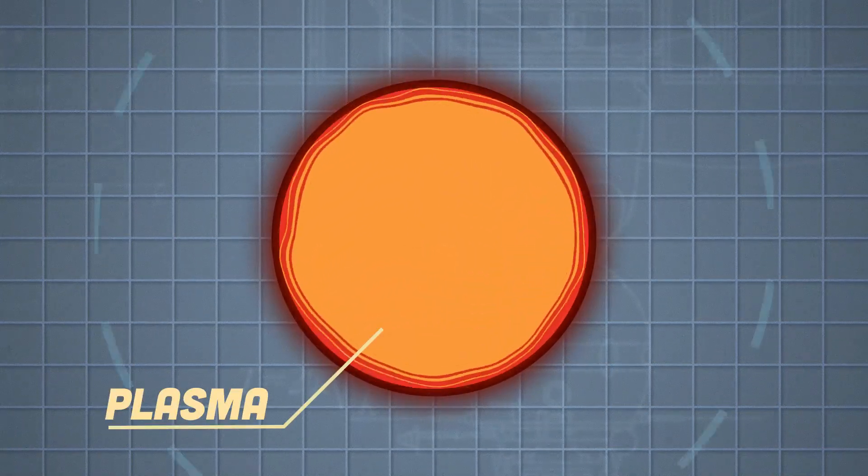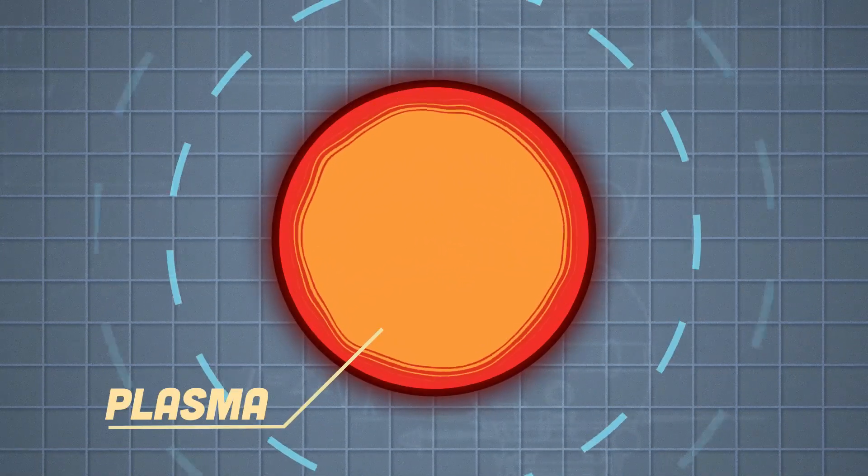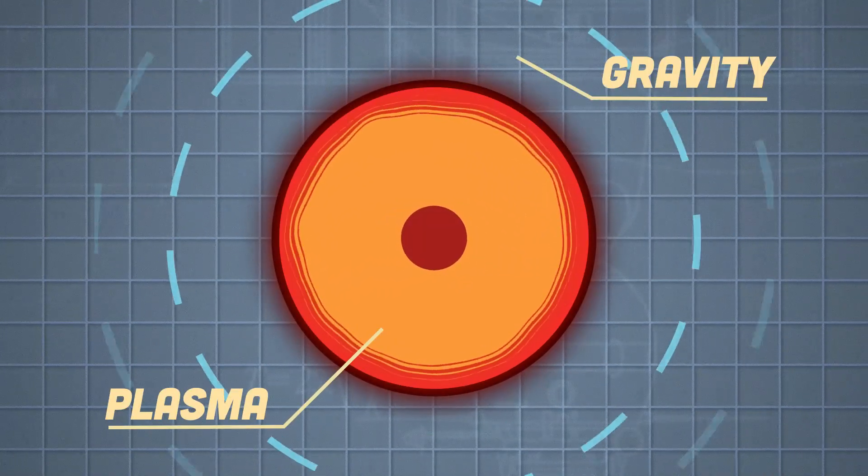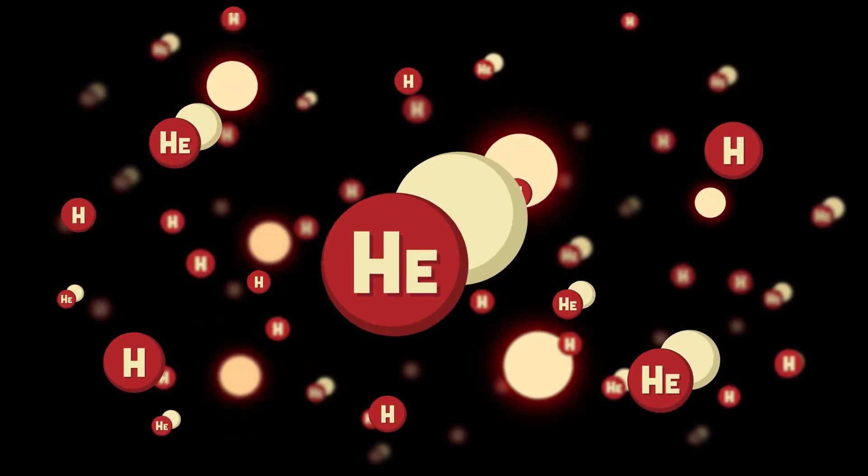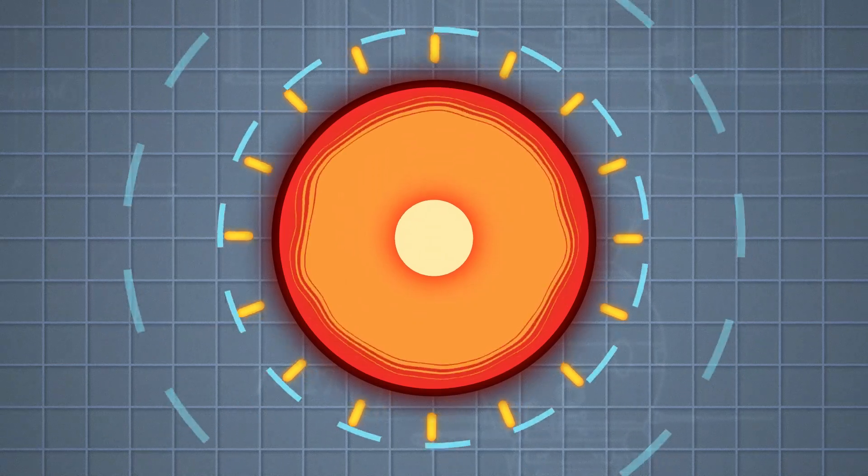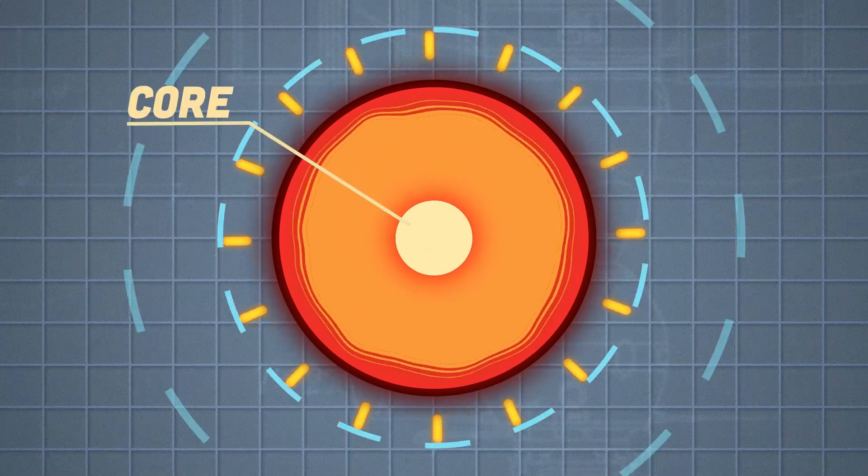When the massive hot plasma is pulled in by gravity, it squeezes the core with force, fusing nuclei. Hydrogen fuses into helium, releasing energy from the core that pushes against the inward gravity.